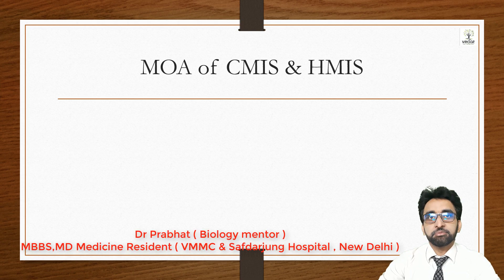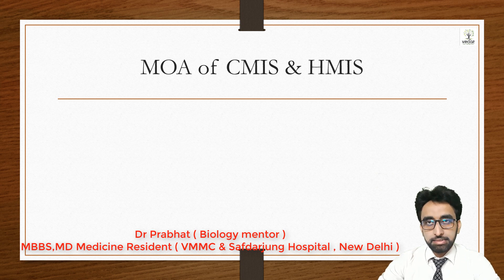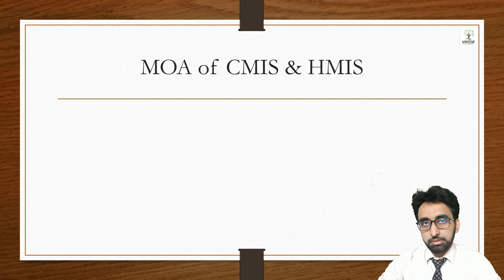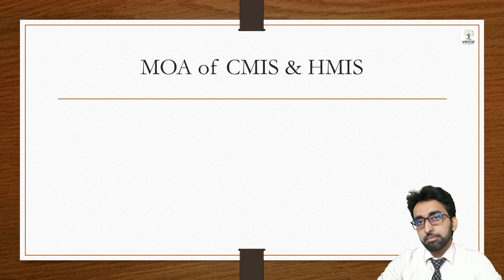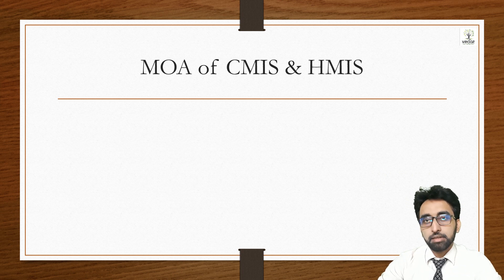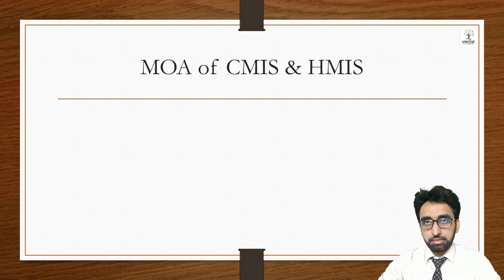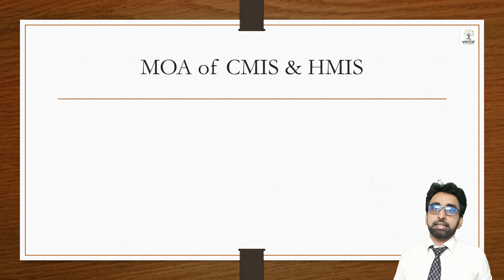Hi friends, I'm Dr. Prabhat, and today we are going to discuss the mechanism of action of B-cells and T-cells. In the last lecture, we saw the structure of lymphoid organs, lymphoid tissue, all the cells of the immune system, and the chemicals involved. So in this lecture, we are going to see how B-cells and T-cells are activated and how they work.